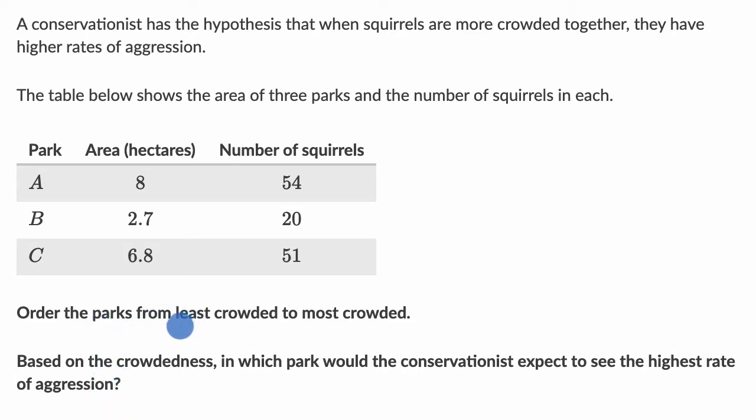We want to order the parks from least crowded to most crowded. How can we think about crowded? We could think about it in terms of the number of squirrels per area, per hectare. Something with a lot of squirrels per hectare would be more crowded, and something with fewer squirrels per hectare would be less crowded.